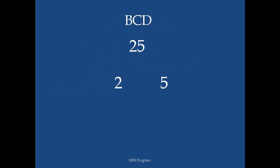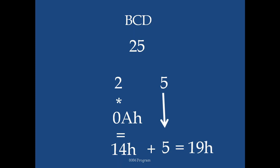Let's take an example. The given BCD number is 25, so it should be split up into two digits: 2 and 5. The higher order digit 2 will be multiplied by 0A, and that result is added with 5 to get the hexadecimal equivalent 19.